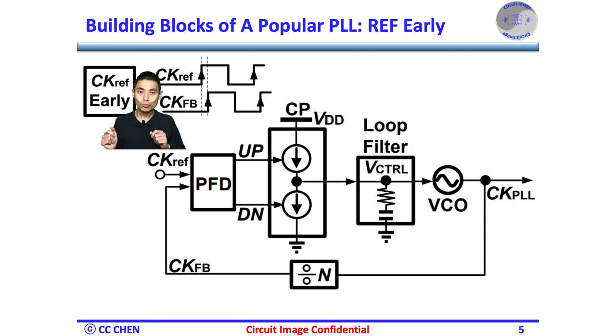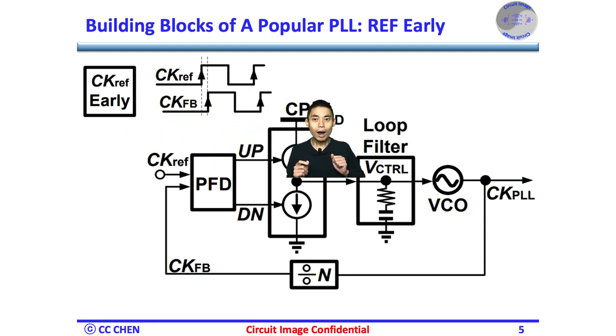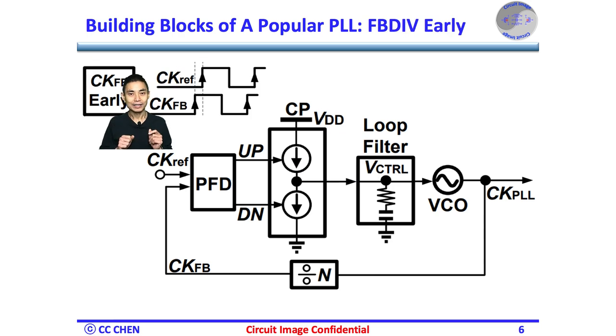the charge pump will output a positive pulse of current from the supply source. This condition not only indicates that the VCO is running slowly, but the charge pump will also pump a little bit of charge into the loop filter to speed the VCO and feedback divider clock up.